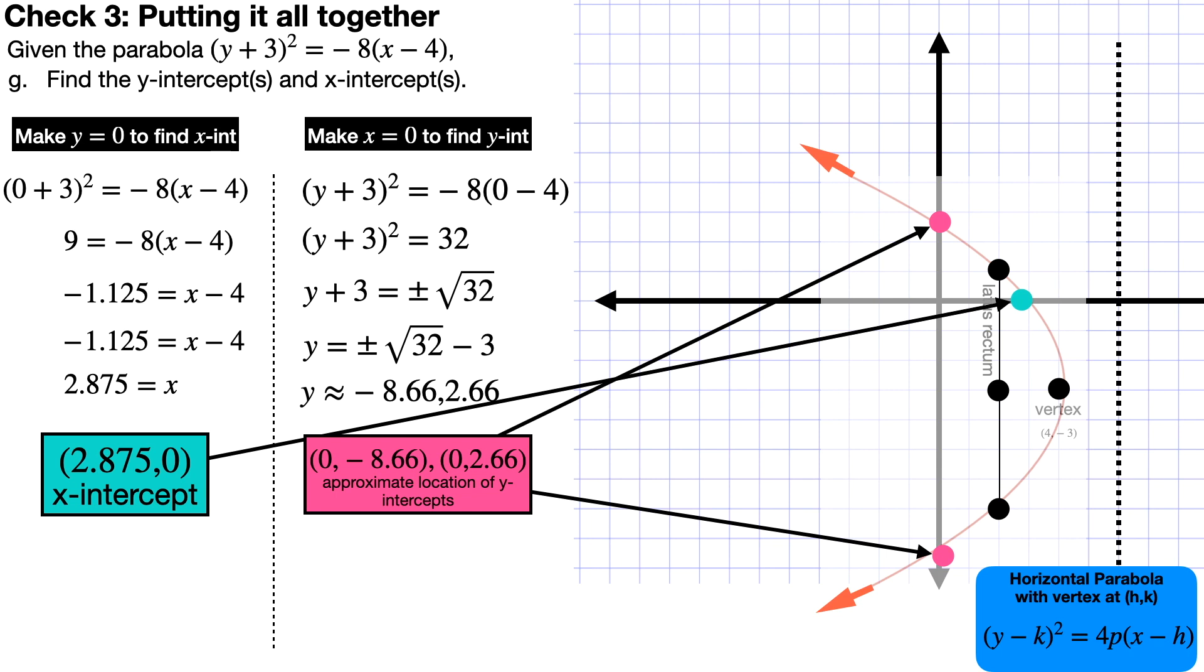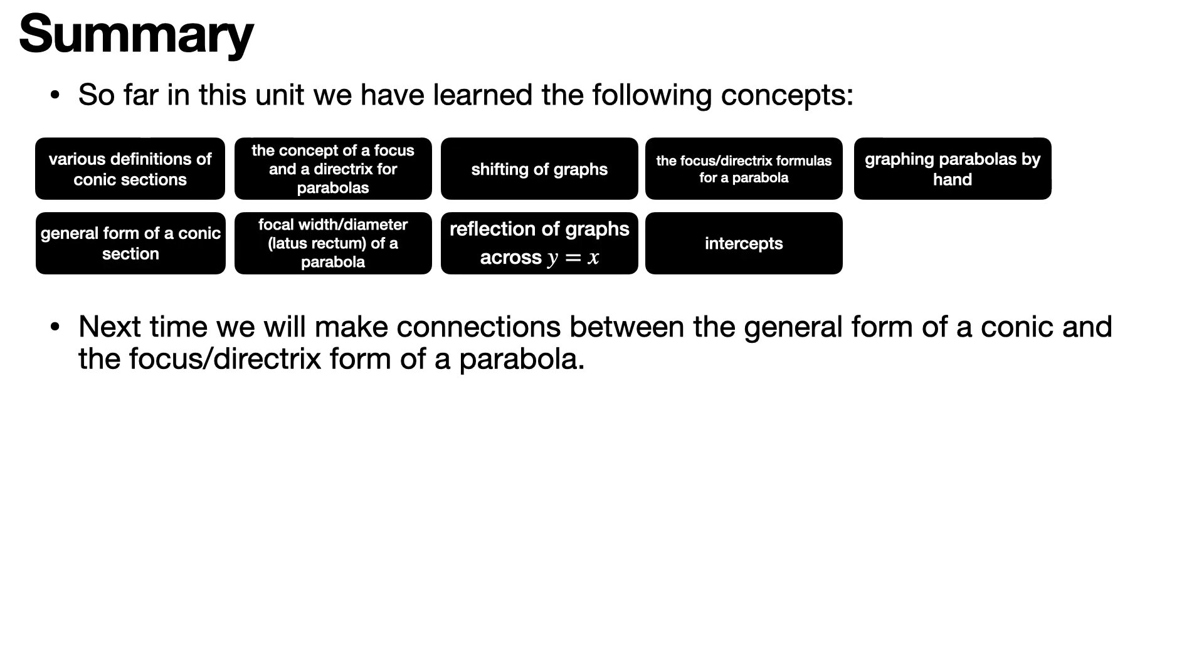And you've sketched a parabola without using technology. And if you were to graph this on Desmos, you'd find the same thing. So, so far we have learned a bunch of concepts: the different types of conic sections, the concept of a focus and directrix, shifting of graphs, reflections of graphs, focus directrix formulas, graphing parabolas by hand, intercepts, the focal width, the general form of a conic section.